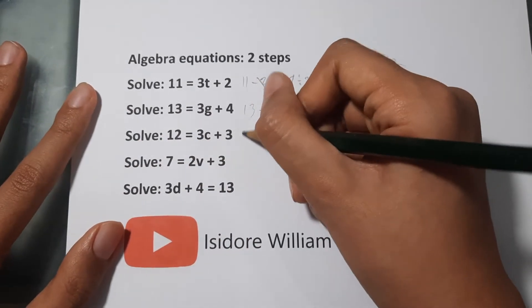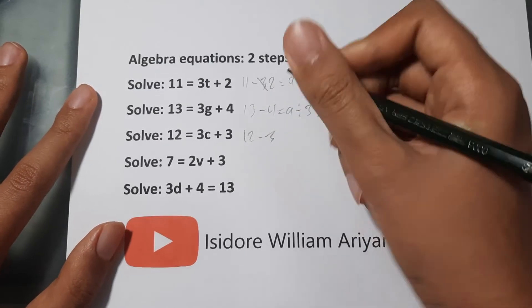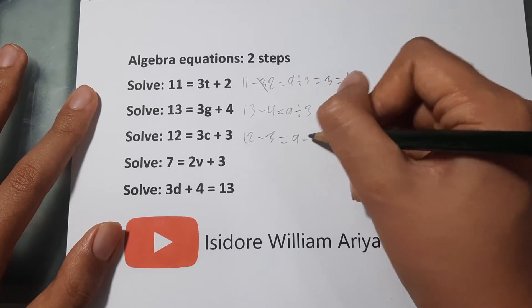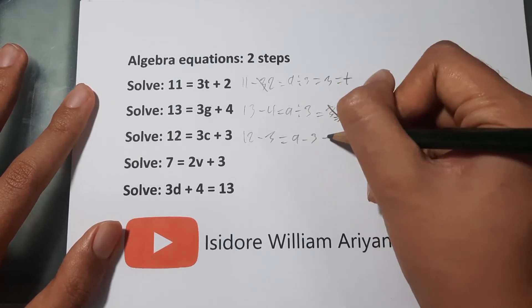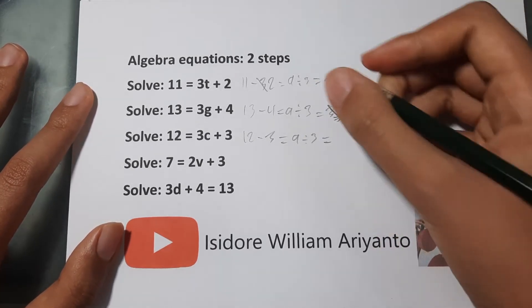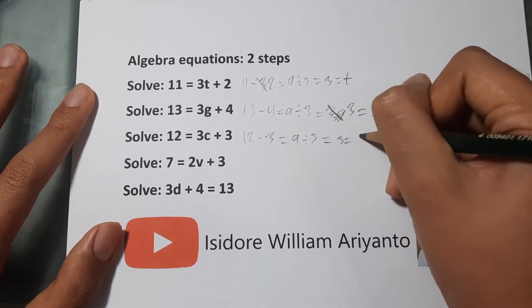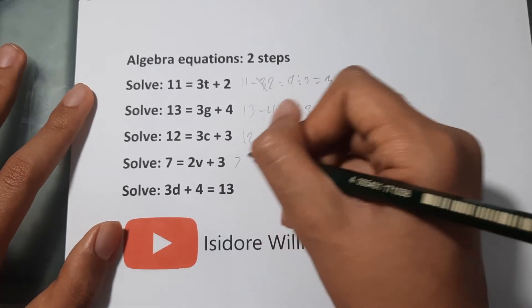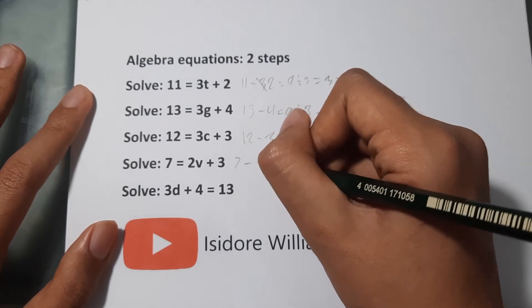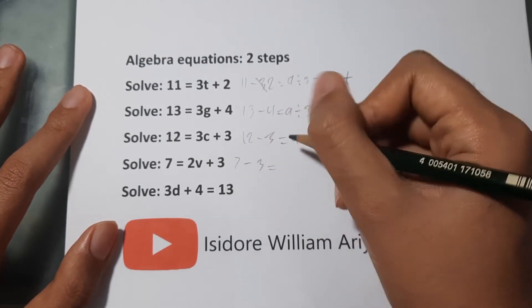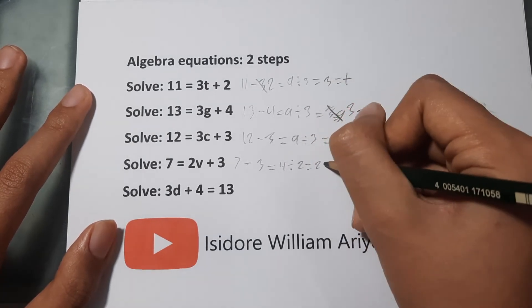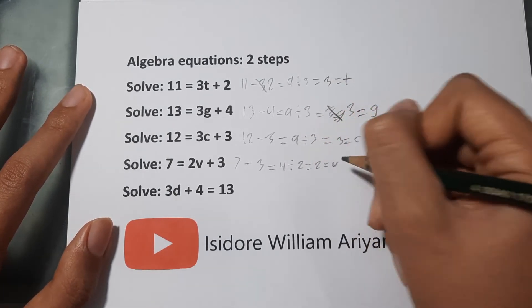12 minus 3 equals 9. 9 divided by 3 equals 3. That's c. 7 minus 3 equals 4. 4 divided by 2 equals 2. That's v.